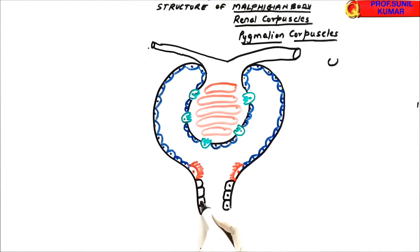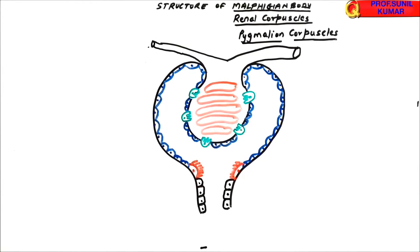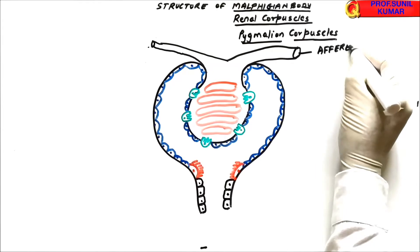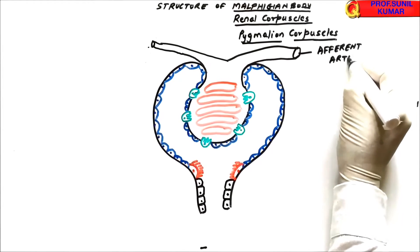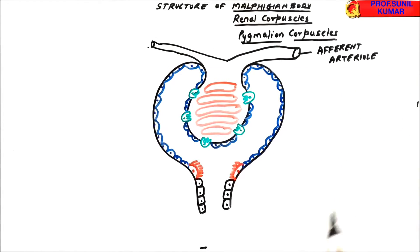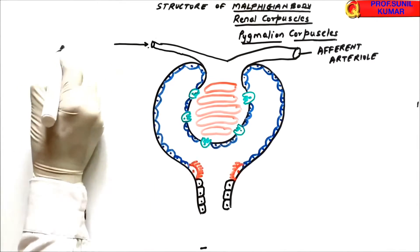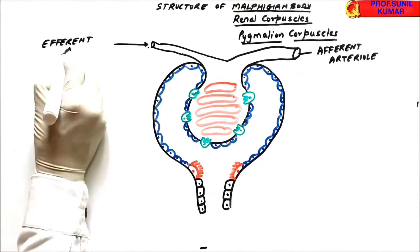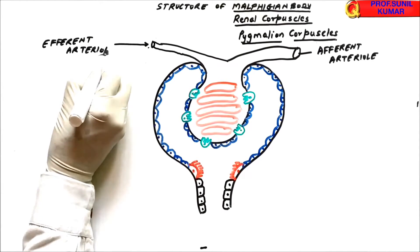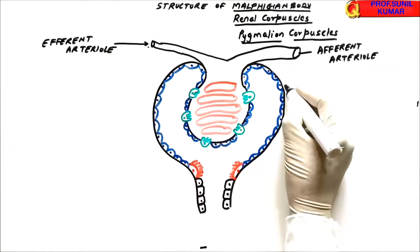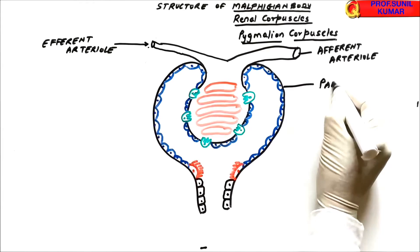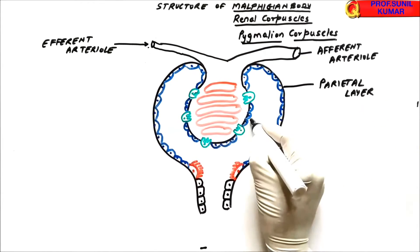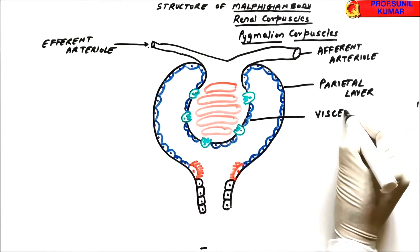Let's do the labeling. The afferent arteriole — bigger in diameter — brings the blood towards the Malpighian body under pressure. The efferent arteriole — smaller in diameter — takes the blood away from the glomerulus or Malpighian body. The outer layer of Bowman's capsule is called the parietal layer, which is made up of continuous squamous epithelium.